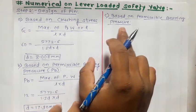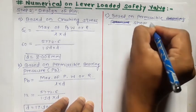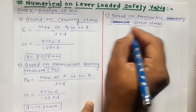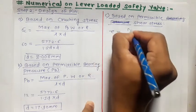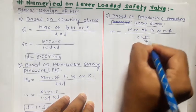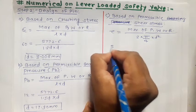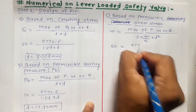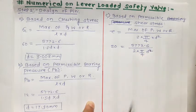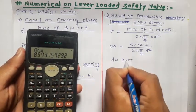The last criteria is design of pin based on permissible shear stress. To find the diameter, we use the equation: tau equals maximum of P, W or R divided by 2 times (pi/4 times d squared). The permissible shear stress is given as 50 MPa, and the maximum of PWR was determined in step 1. Solving for D, the diameter of pin based on permissible shear stress is D = 8.57 mm.